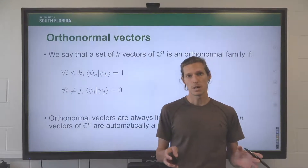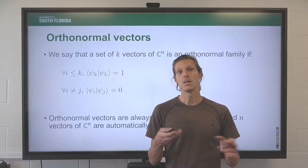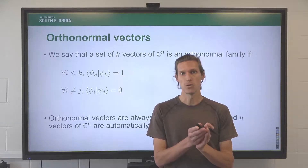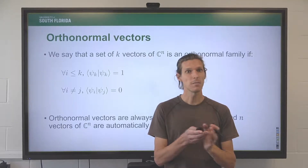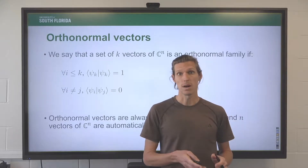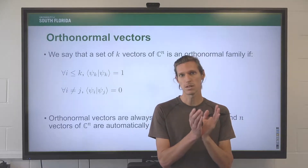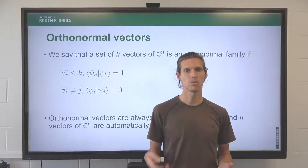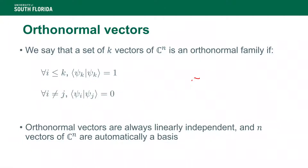An important property of vectors in this course is orthogonality and the property that a basis can be orthonormal. A family of vectors in Cⁿ is orthogonal if their inner product is zero, and if additionally those vectors have norm one, we call them an orthonormal family. Orthonormal vectors are always linearly independent, so they always form a basis of whatever space they span. If you have n orthonormal vectors in Cⁿ, you know you have a basis.